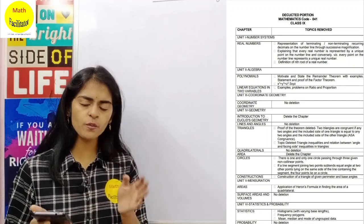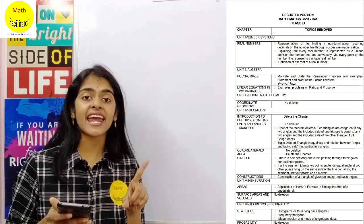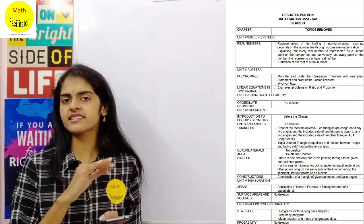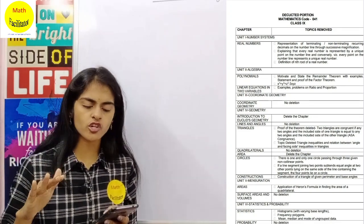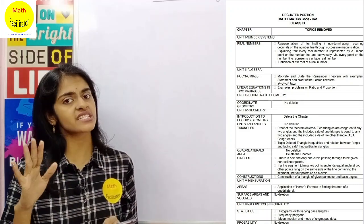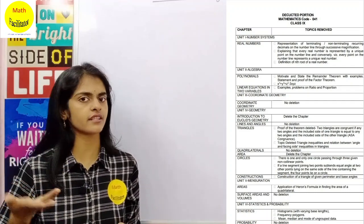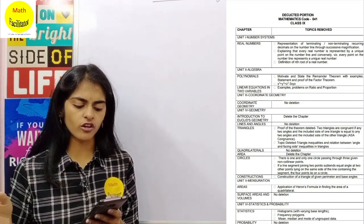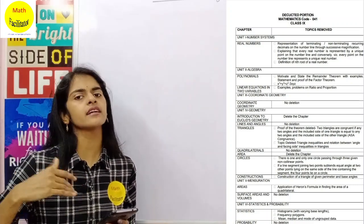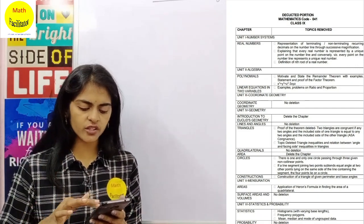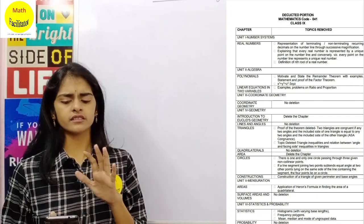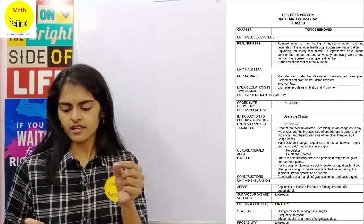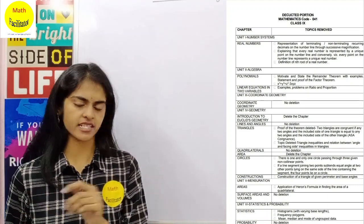Euclid's Geometry had very less weightage in the examination and that chapter is now deleted. Also, the Areas chapter is deleted. So there are two complete chapters deleted in class 9: Euclid's Geometry and Areas. Other chapters — Lines and Angles, Coordinate Geometry, Surface Areas and Volumes, Quadrilaterals, and Probability — have no topics deleted. In Triangles, the proof of the theorem 'two triangles are congruent if two angles and the included side are equal' is deleted, but the exercise problems you still have to learn.